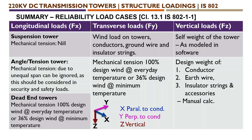For vertical loads, we need to consider the self weight of the tower as modeled in the software, because the self weight of the tower is given in the model itself by selecting the self weight option. In addition, we give the weight of conductor, earth wire, insulator strings and accessories, which we calculate manually. These are the three directions X, Y, Z — where X is parallel to the conductor span, Y is perpendicular to conductor span, and Z is vertical downward.